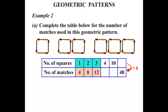We've worked out the rule, so let's complete the rest of the table. When there are four squares, if we times by four we get sixteen. If there were ten squares, we still do the same — times by four — we'd have forty matches required. And this one, the number of squares we don't know, but if we times by four we get forty-eight. So we've got to think: what number times four gives forty-eight? That would be twelve. In other words, twelve squares would require forty-eight matches.